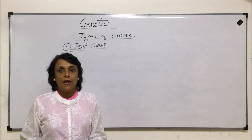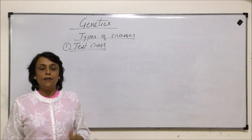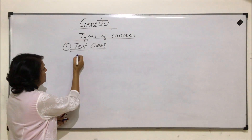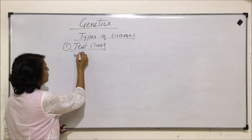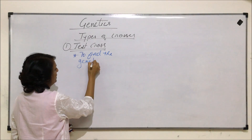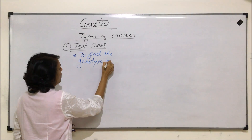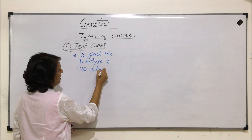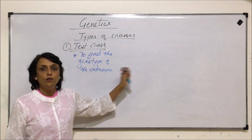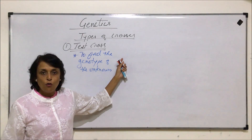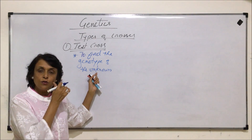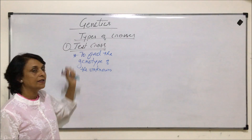In a test cross, we are testing or trying to find out the genotype of the unknown. The purpose of this test cross is to find the genotype of the unknown. To understand this, we will start with the known genotype so that we get a clue, and then we will come to the ratios — by simply knowing the ratios, how can we reach to the conclusion.